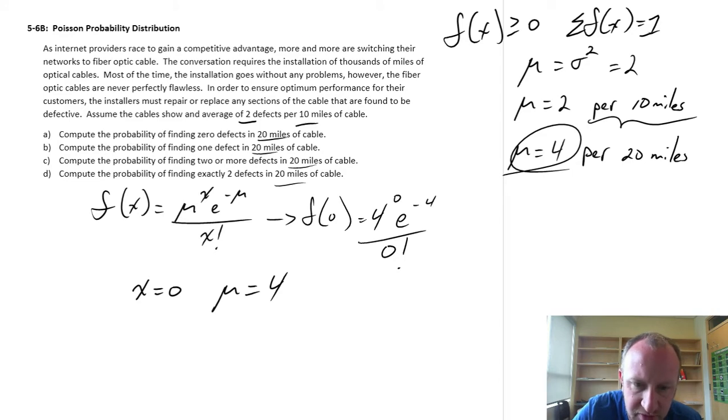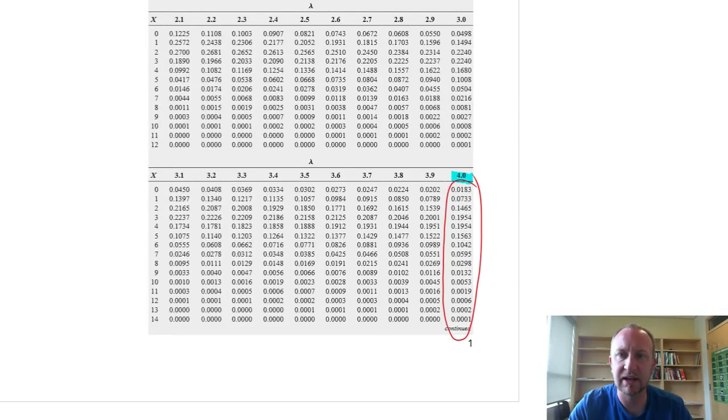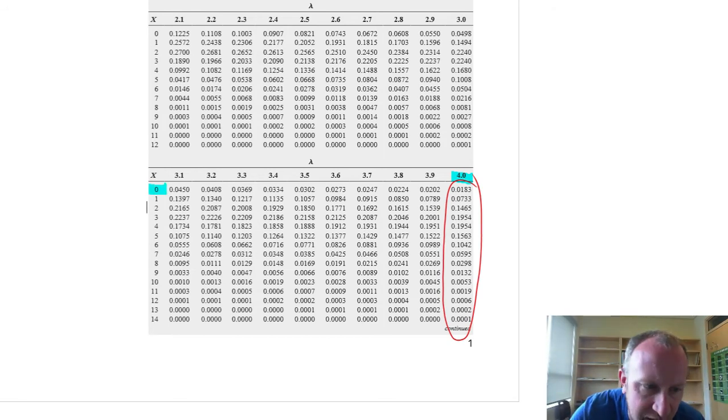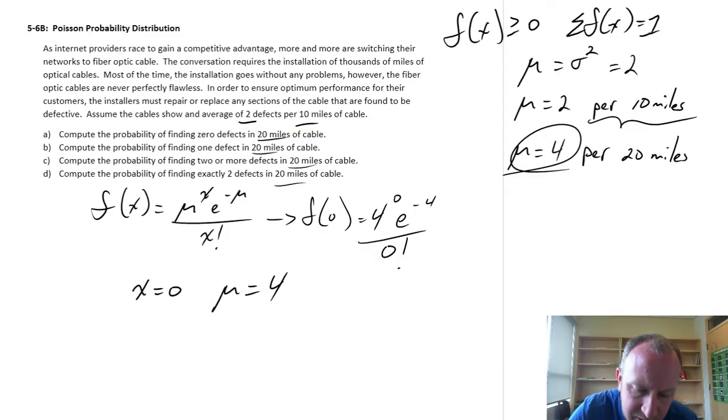x is 0, mu is 4. So here we found that distribution with a mean of 4. Here's x is equal to 0. And so our probability, our relevant probability, is this one here, 0.0183. So I can come back, and here I have 0.0183. Next.